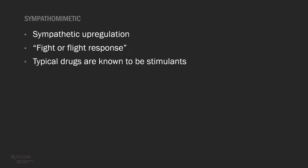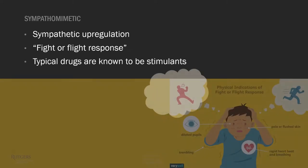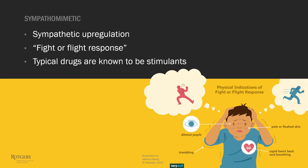A sympathomimetic toxidrome is basically where you get sympathetic upregulation — what we typically call the fight or flight response. The class of drugs normally associated with this toxidrome are known as stimulants. When you're in a nerve-wracking situation, you get dilated pupils, rapid heartbeat, and those kinds of symptoms.